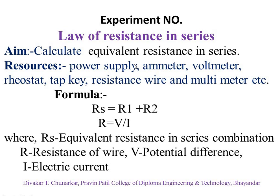In this experiment number 7, we have to use two formulas. First one: Rs equal to R1 plus R2. Here, Rs is the equivalent resistance in series combination. R1 and R2 are resistances. So in equivalent series combination we have to use two resistances. R is the resistance of wire, V is the potential difference, I is the current, and R1, R2 are the two resistances used in this experiment.